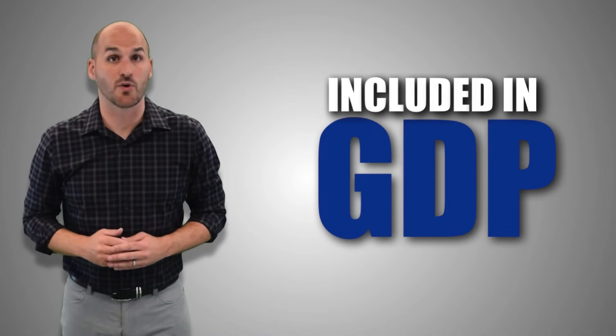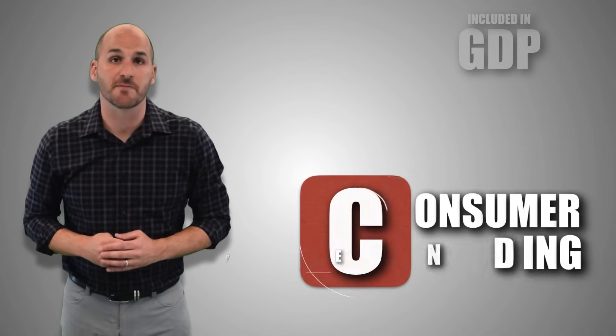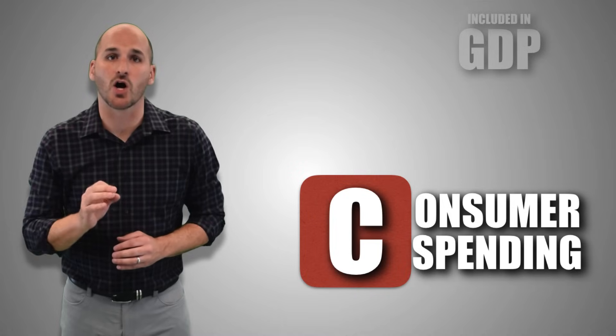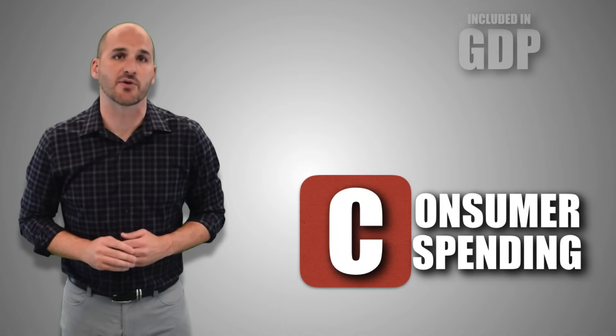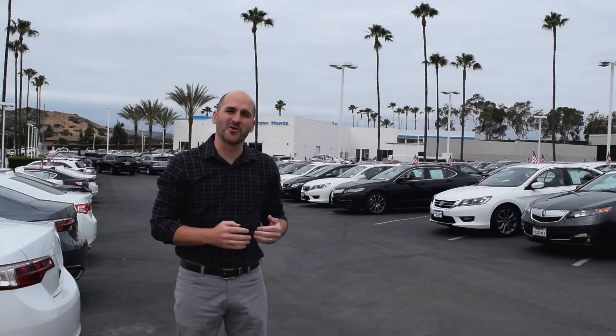GDP is made up of four components. The first is consumer spending — the dollar value of expenditures by all consumers on goods and services in the aggregate economy. If you buy a new car, a new TV, pay for a service like an oil change or tire rotation, treat your family to dinner, or drop a hundred dollars at Costco, it counts in the gross domestic product.